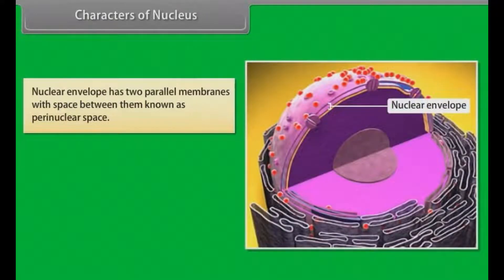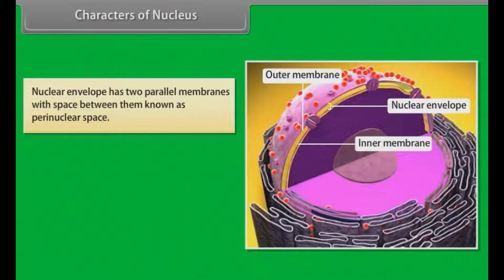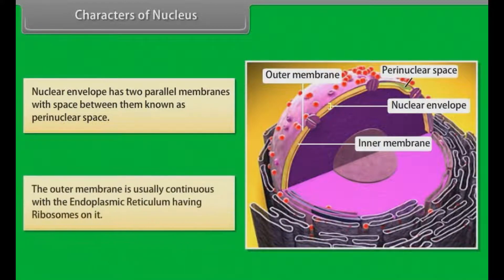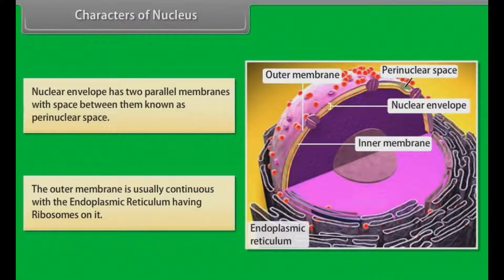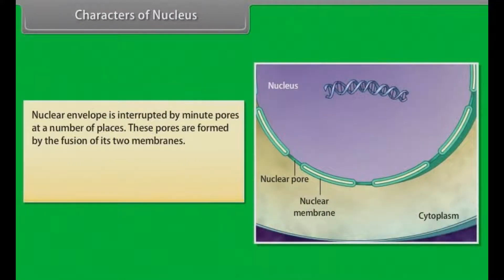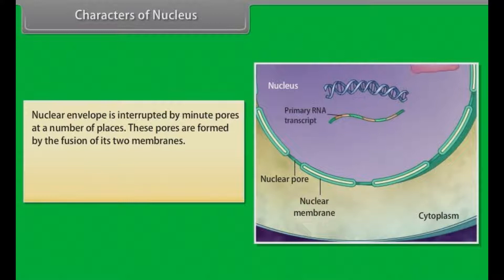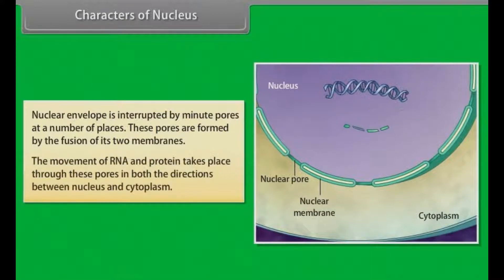Nuclear envelope has two parallel membranes with a space between them known as the perinuclear space. The outer membrane is usually continuous with the endoplasmic reticulum, having ribosomes on it. Nuclear envelope is interrupted by minute pores at a number of places. These pores are formed by the fusion of its two membranes. The movement of RNA and protein takes place through these pores in both directions between the nucleus and the cytoplasm.